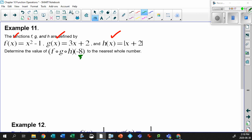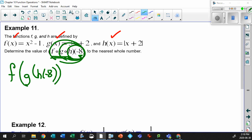So how do we do this? Simple. Remember what this means. You always deal with the innermost first, then go to the outer, then go to the last. So this, if you think about it, is h of -8, followed by g of whatever that value is, followed by f of whatever that value is.